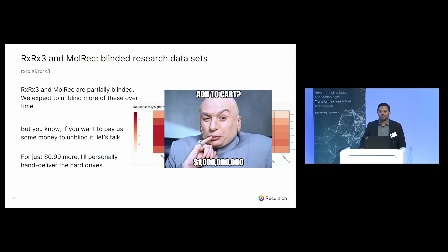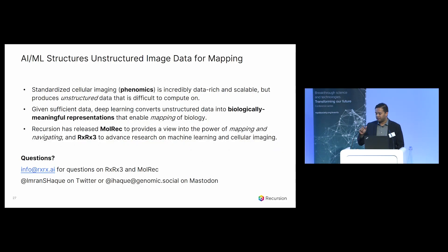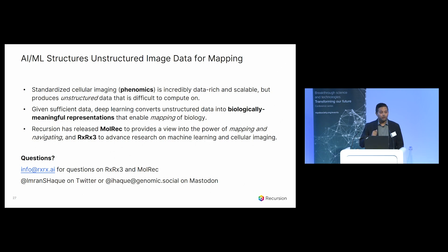These datasets are partially blinded — we are a commercial company and hold back some data for ourselves, but we expect to unblind more over time. And if you'd like to unblind them all, come talk to me at the end of the meeting — for only a small additional fee, I will personally hand-deliver the hard drives to your offices. In conclusion, a key application for AI and ML is to take unstructured imaging data from scalable assays and turn it into structured data to build maps. Standardized cellular imaging is data-rich and scalable but not intrinsically computable; given sufficient data, deep learning turns it into biologically meaningful representations that may be the next great omics technology. Go to rxrx3.rxrx.ai and check out MolRec to advance your own deep learning research.